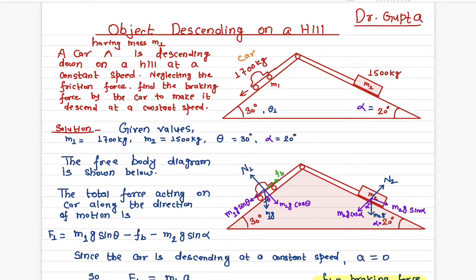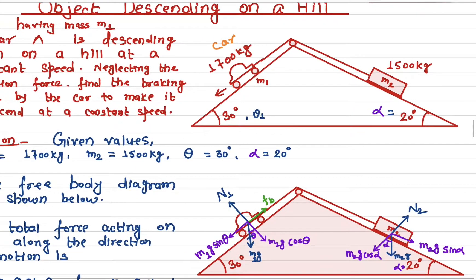In this video we'll talk about two objects on a double inclined plane. We have a car on an inclined plane which is connected to a mass on the other side on the other inclined plane. The goal is to make the car descend at a constant speed while also applying the brake onto the car. We need to find the average braking force to make this car descend at a constant speed.